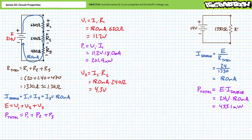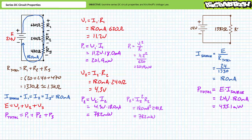Similarly, the voltage drop across R2: V2 equals I2 times R2. R2 carries roughly 18 milliamps. Substituting our given values demonstrates V2 to be roughly 4.3 volts. The power dissipated by R2: P2 equals V2 times I2, which demonstrates R2 dissipates roughly 78.2 milliwatts of power. You'll note other permutations of the power equation, such as voltage squared divided by resistance and current squared times resistance, yield the same results. Using these different permutations to solve for the same property are a great way of checking your work.